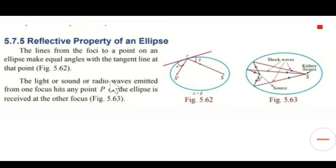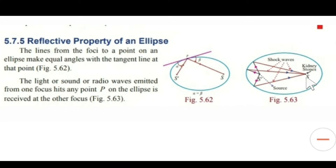In other words, the light or sound or radio waves emitted from one focus hits any point P on the ellipse and is received at the other focus. Now see this diagram — this is the first focus. The light or radio waves emitted from one focus hit any point P on the ellipse and are received at the other focus S dash.